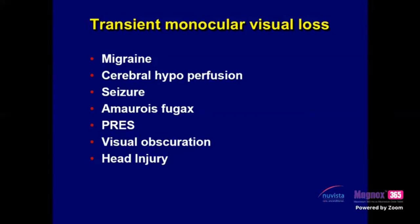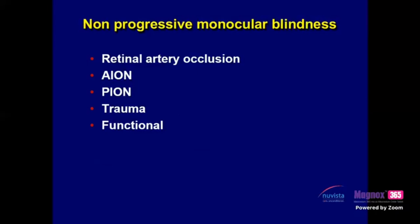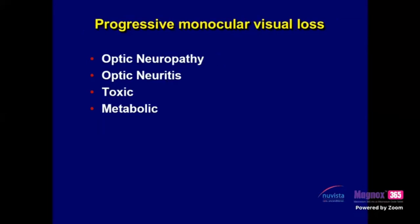Transient monocular visual loss causes include: amaurosis fugax (carotid artery TIA — most important), migraine, cerebral hypoperfusion, seizure, PRES, visual obscuration from raised ICP, and head injury. Non-progressive monocular visual loss: retinal artery occlusion, anterior ischemic neuropathy, posterior ischemic neuropathy, trauma, and functional (hysterical blindness). Progressive monocular visual loss: optic neuropathy, optic neuritis, toxic, and metabolic causes. For binocular transient visual loss: cerebral hypoperfusion, migraine, seizure, pituitary apoplexy, PRES, functional, and acute raised ICP. Always consider the most common causes and keep your differential diagnosis minimal as a clinician.